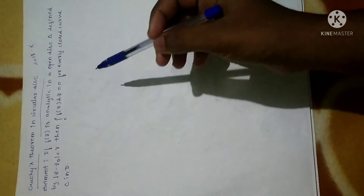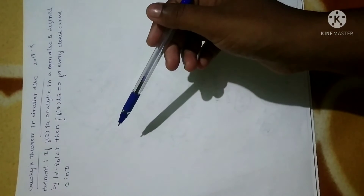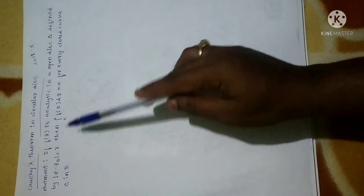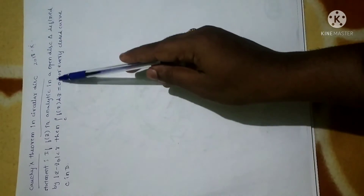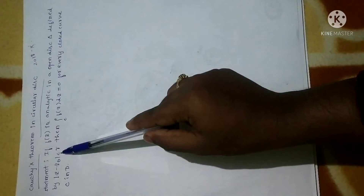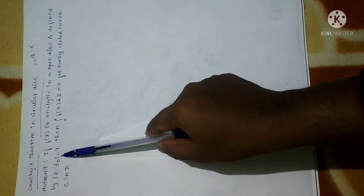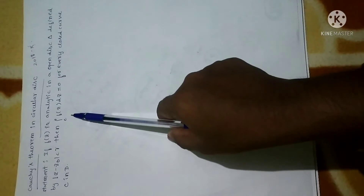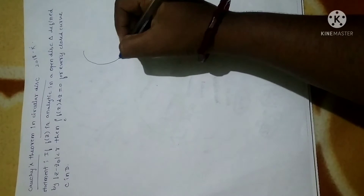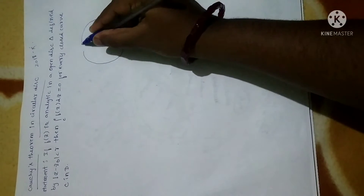In this session, let me explain one more important theorem. As we have done the same for triangle and rectangle, this is also important — it has been asked in the year 2018. The statement is: if f(z) is analytical in an open disk delta defined by |z - z₀| < r, then the integral over closed curve C of f(z) dz is equal to 0 for every closed curve C in D.